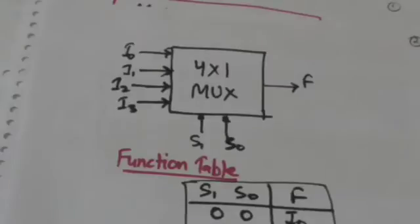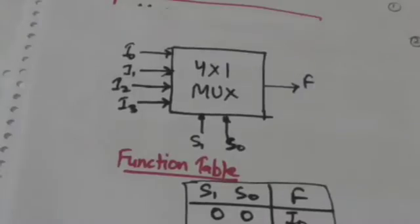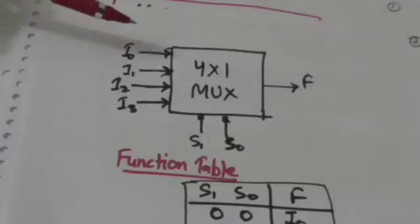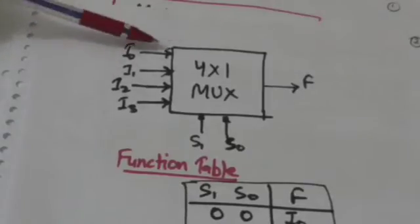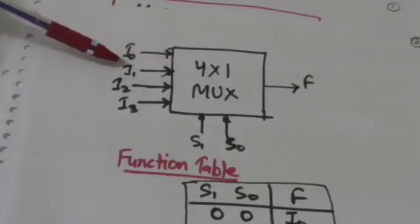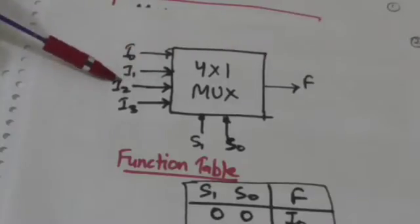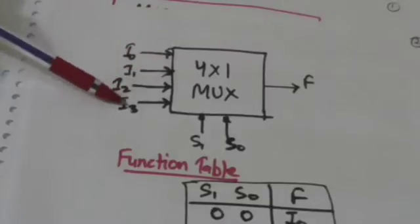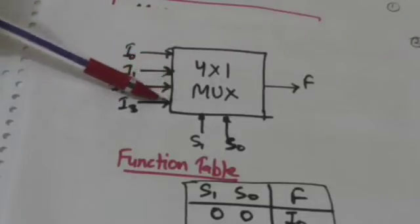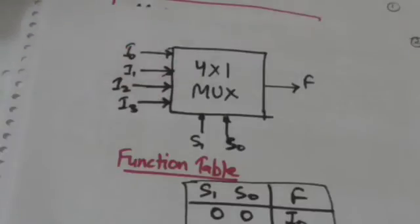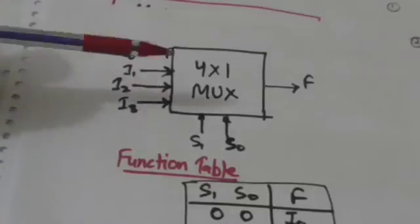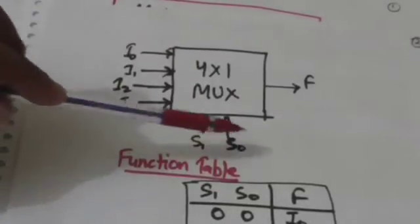Now look at this multiplexer — it is a 4×1 multiplexer, so it has 4 input lines and a single output line. I0 is the input applied to the first input line, I1 is the input applied to the second input line, I2 is the input applied to the third input line, and I3 is the input applied to the fourth input line. S1 and S0 are the selection lines.